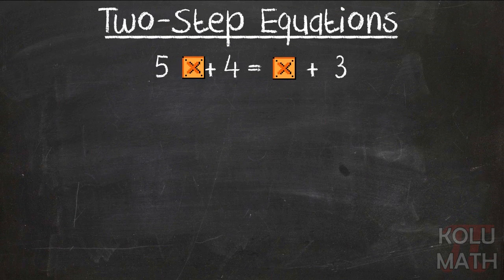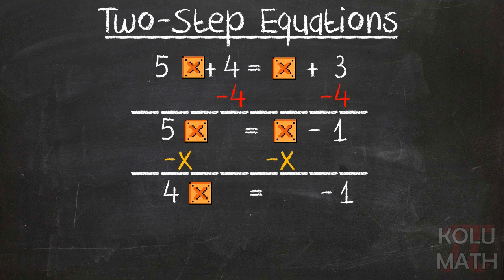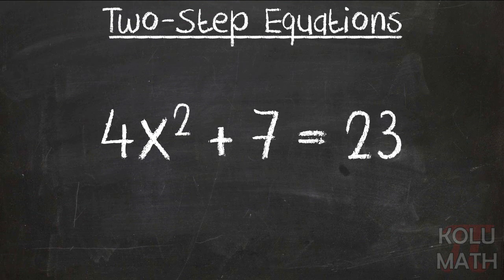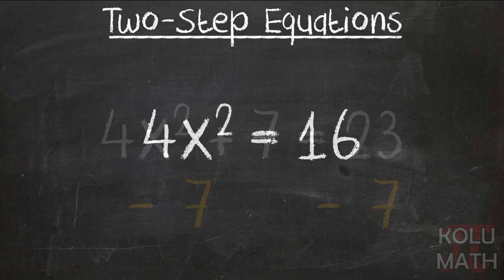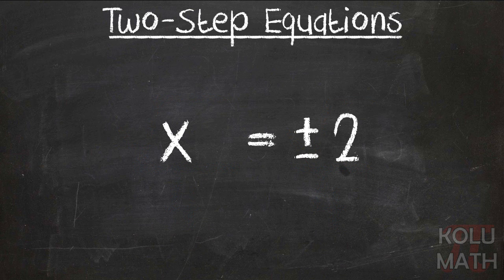Let's take a look at another one. 5x plus 4 equals x plus 3. Let's deal with that plus 4 first by subtracting 4 from both sides — that leaves us with 5x equals x minus 1. Let's deal with the x on the right by subtracting x from both sides, giving us 4x equals negative 1. Since we've got that 4 in front of the x, divide both sides by 4, giving us x equals negative one fourth. No matter which metaphor you prefer for understanding algebra, remember it's all about preserving balance and maintaining the integrity of the equation.